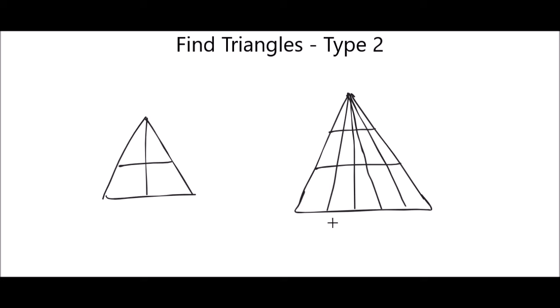So this is different type of triangle. This is another type of triangles. Here vertical partitions will also be available. At that time, how to calculate number of triangles? Now we'll see.